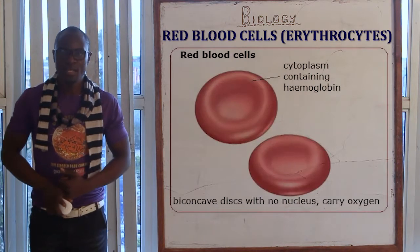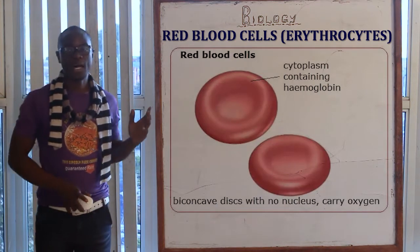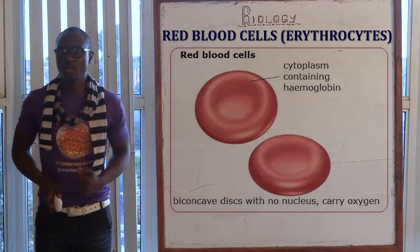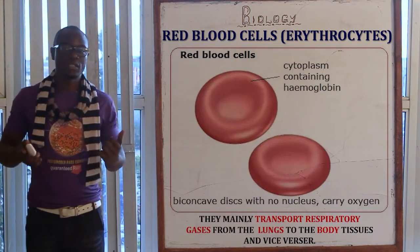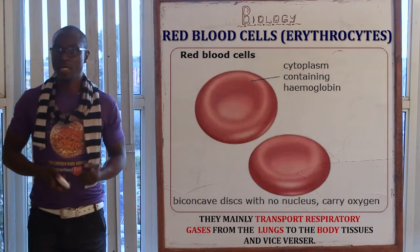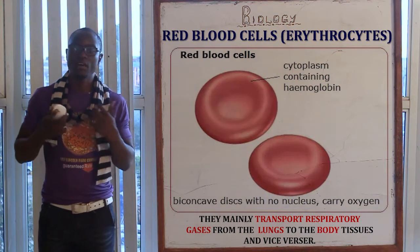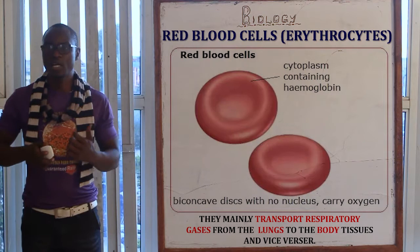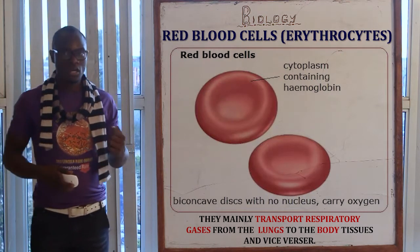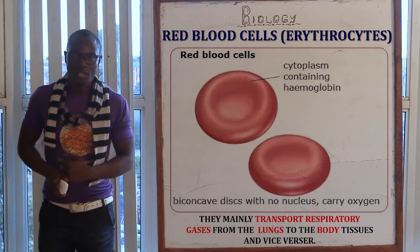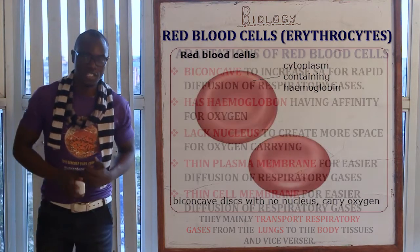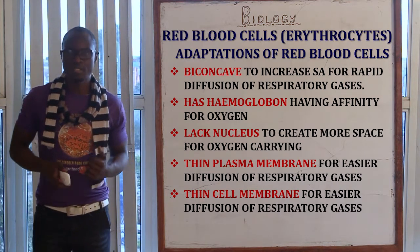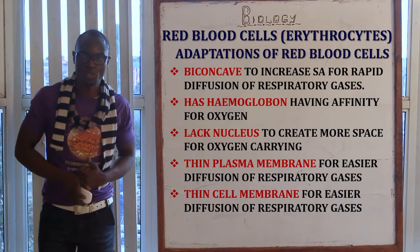Let's look at the first blood cell, which is the red blood cell. The red blood cell can also be called the erythrocyte, and their function is mainly to transport the respiratory gases from the lungs to the rest of the body. The red blood cell is biconcave in shape, which is to increase the surface area for rapid diffusion of respiratory gases.